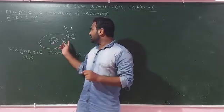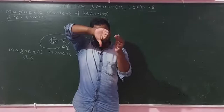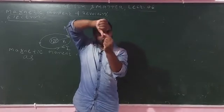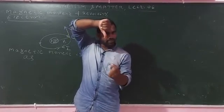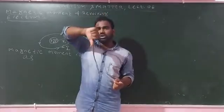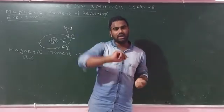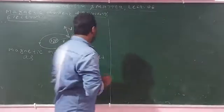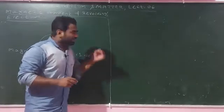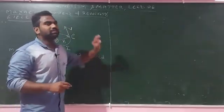We have the clockwise current direction of the electrons. The clockwise direction gives us the thumb pointing in the direction of the magnetic moment. So we have the magnetic moment direction determined by the current direction of the electrons.